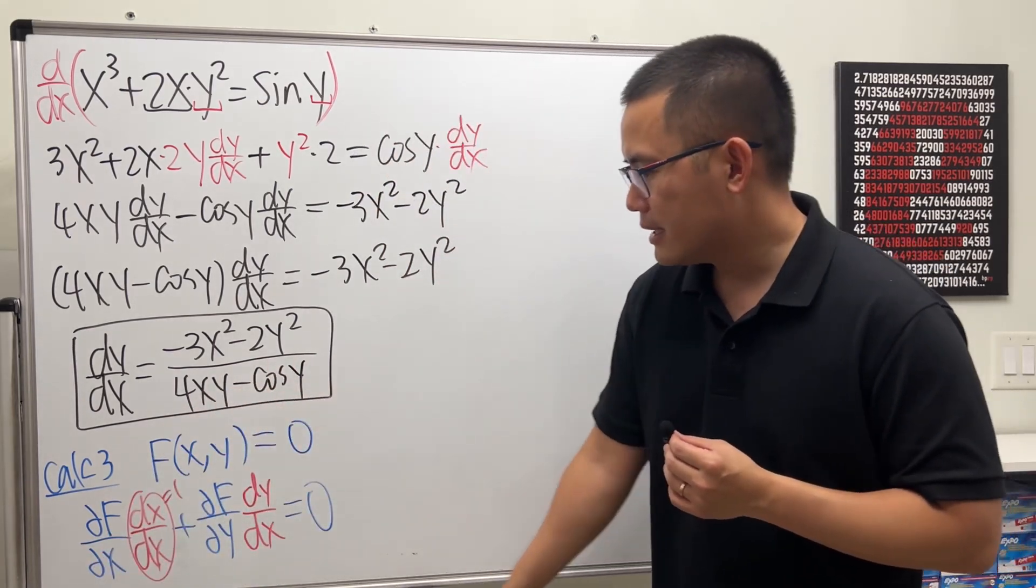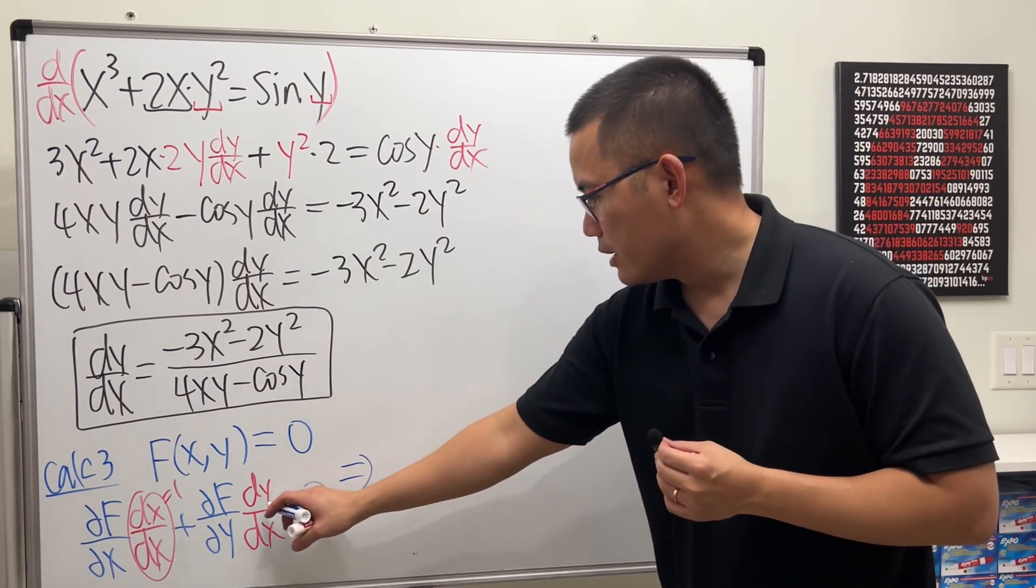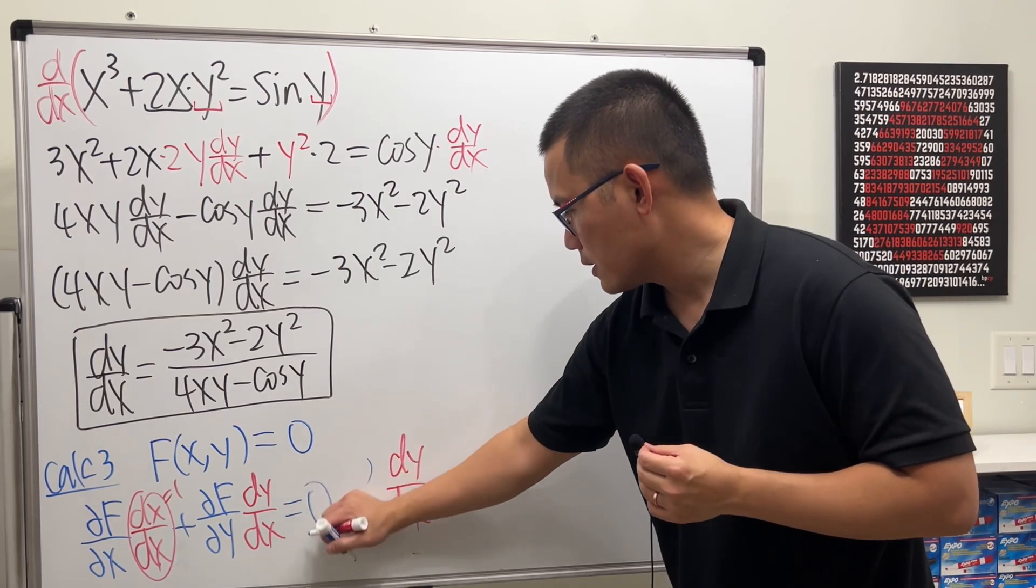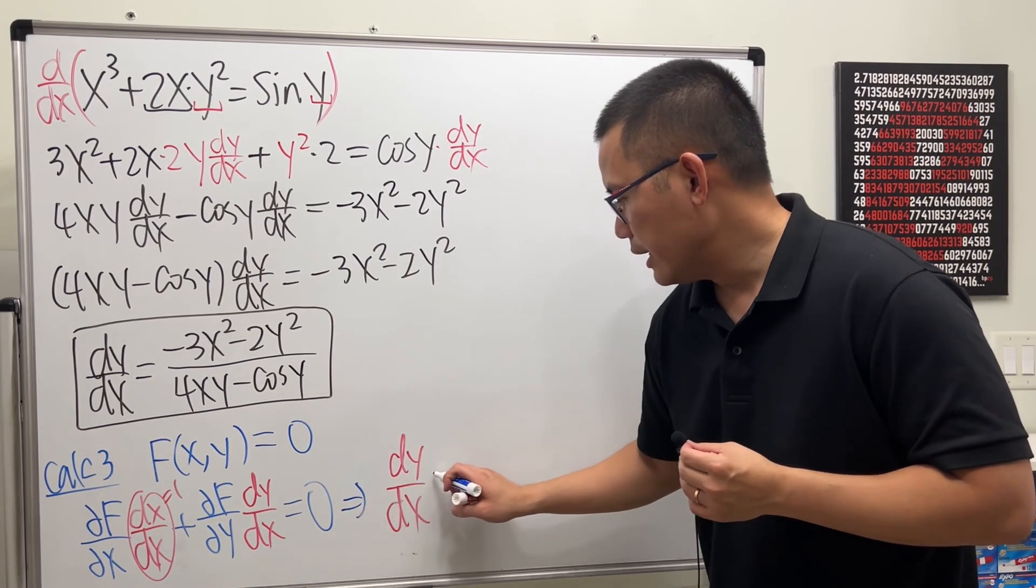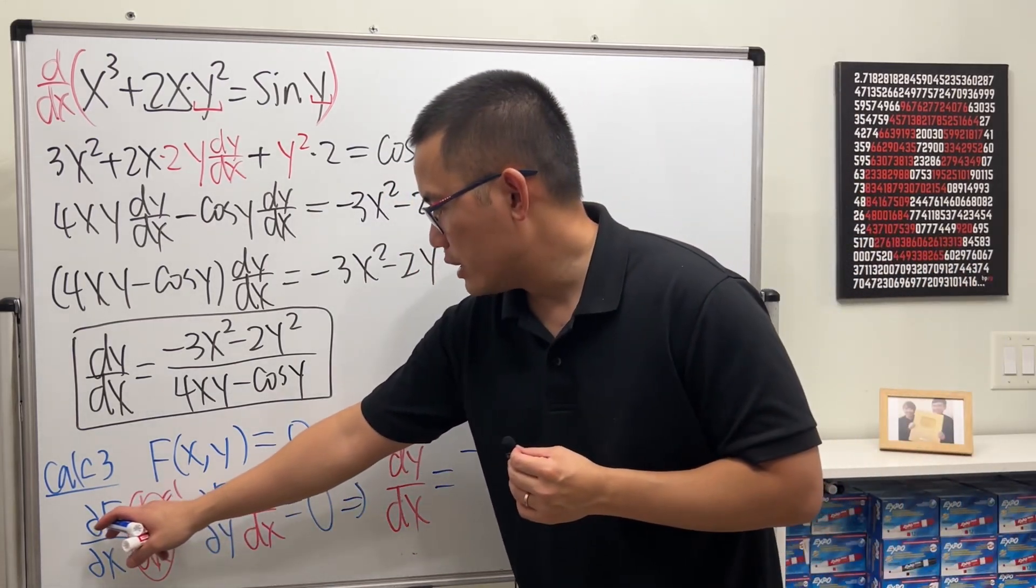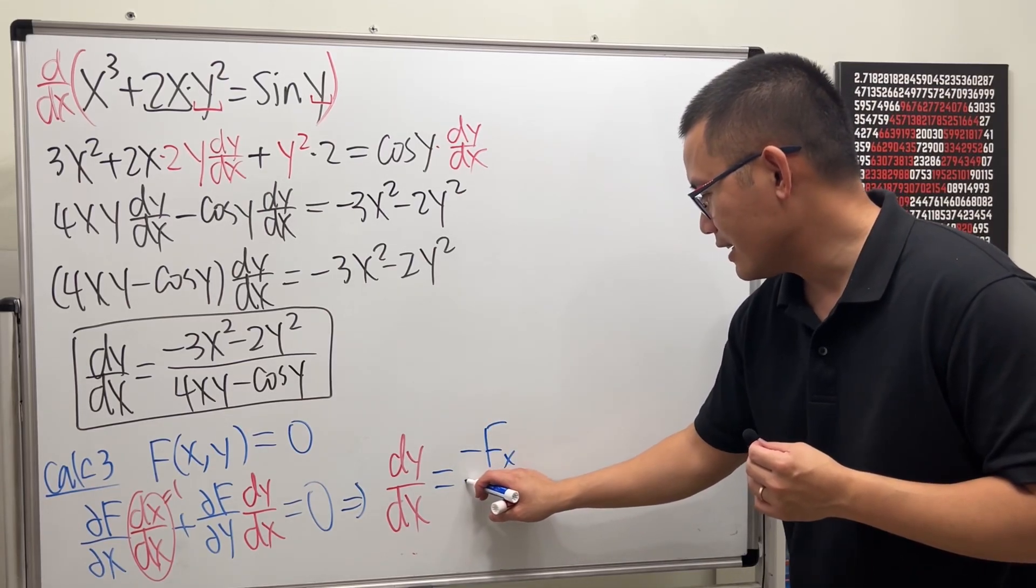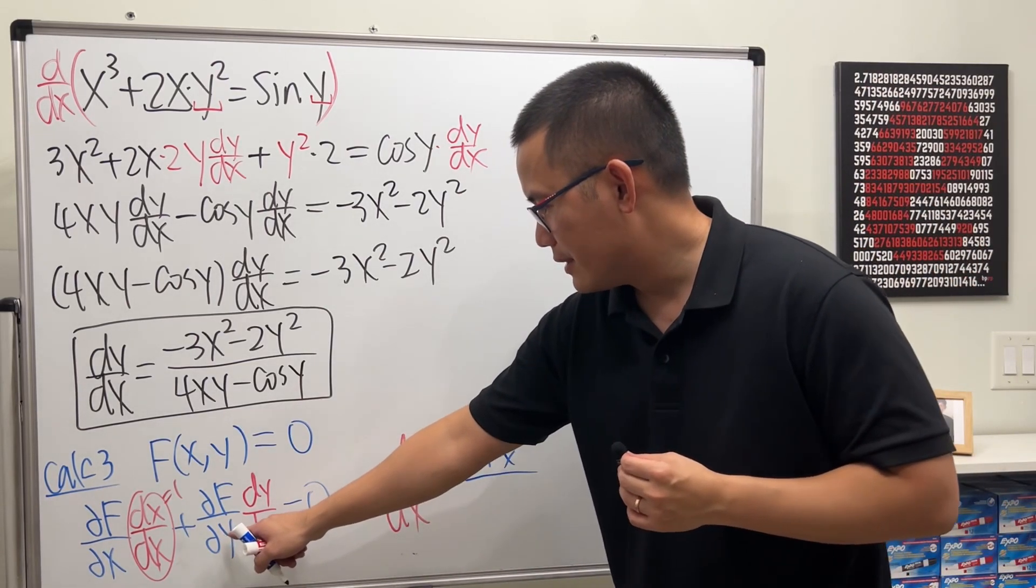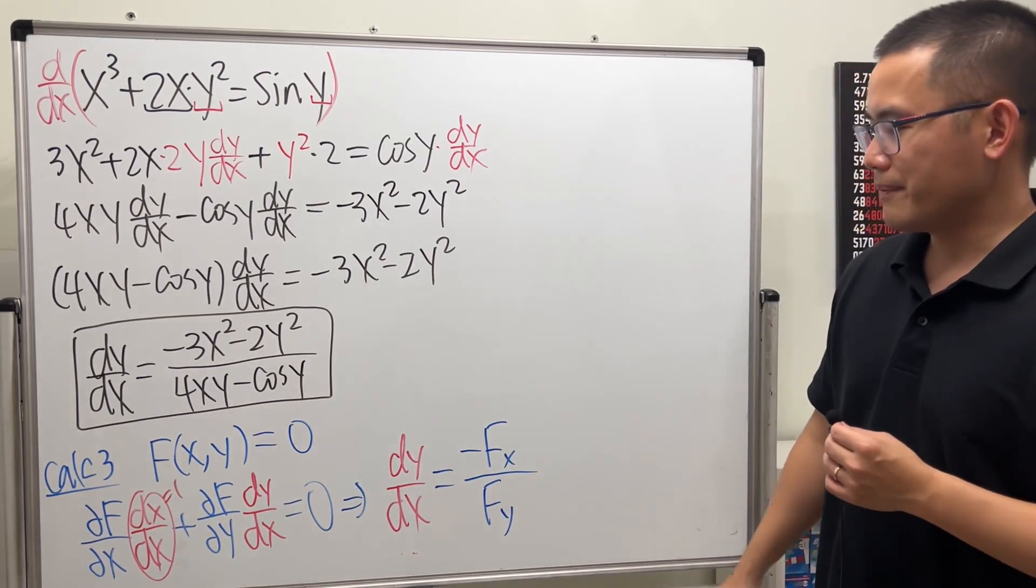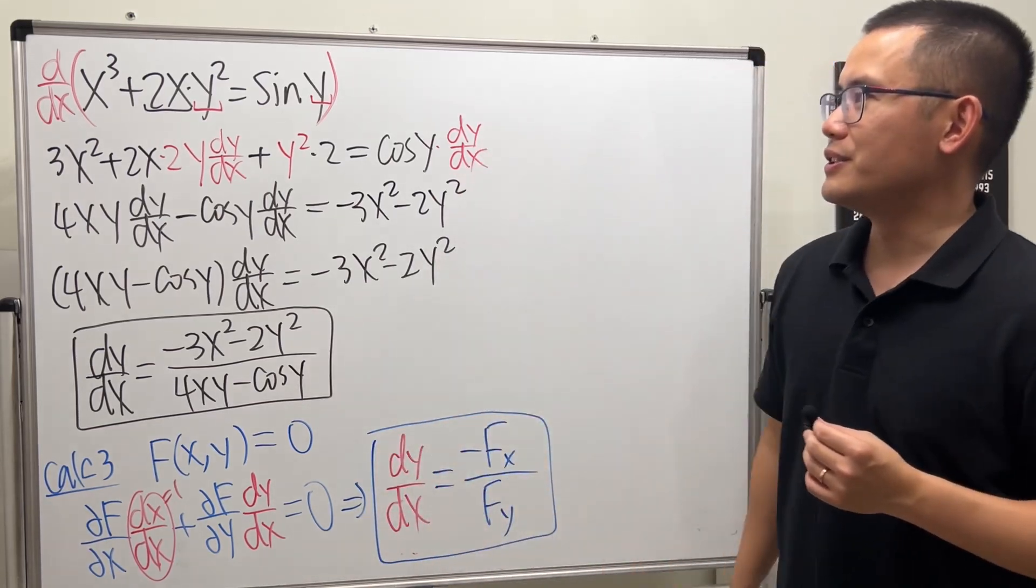Because what we are about to do is put this to the other side, and then divide this. You will see that this is going to give us dy/dx equals negative partial f with respect to x. Let's just write it this notation, it's definitely easier. Over this, which is f with a subscript y. So this is the formula for finding implicit differentiation.